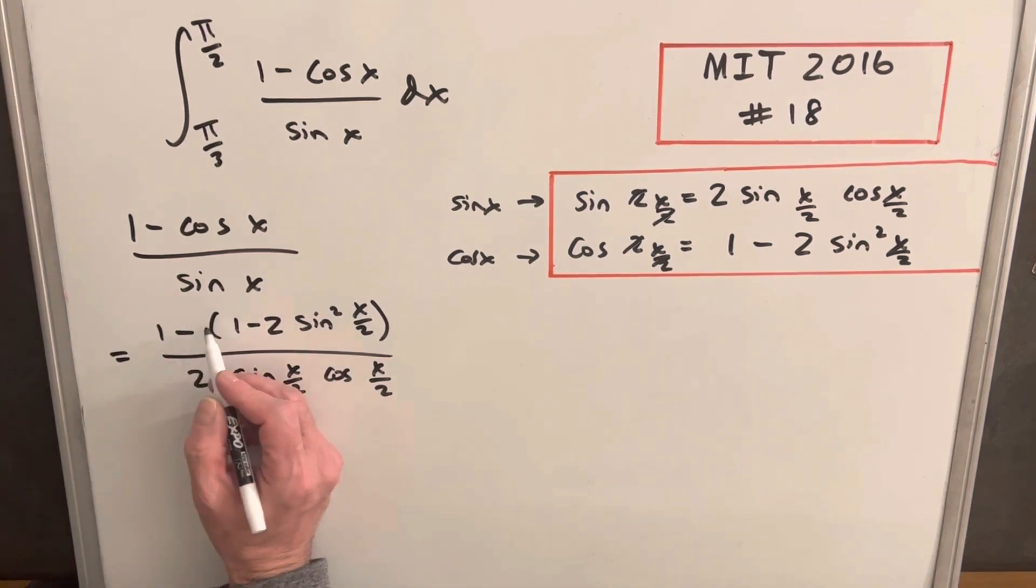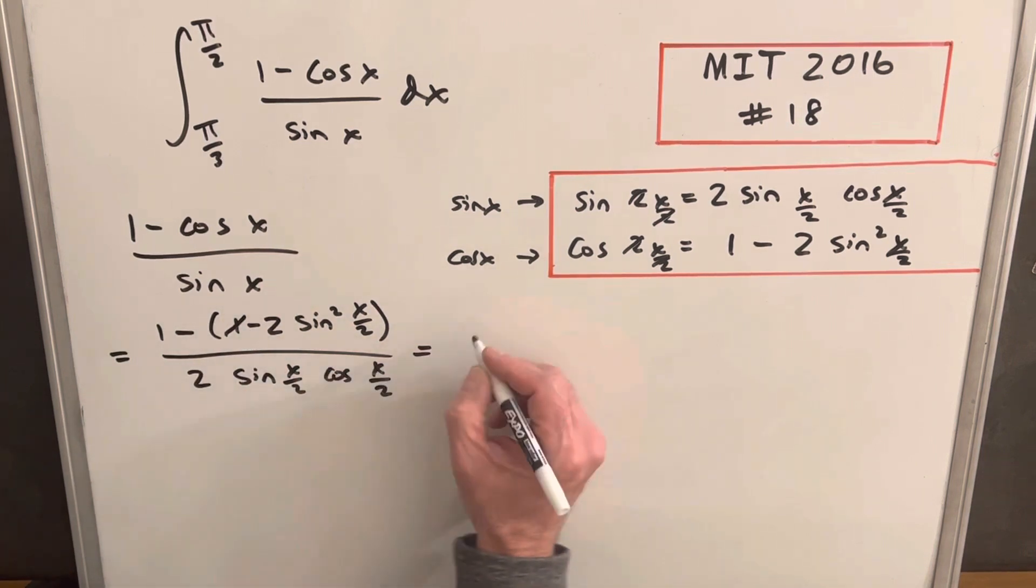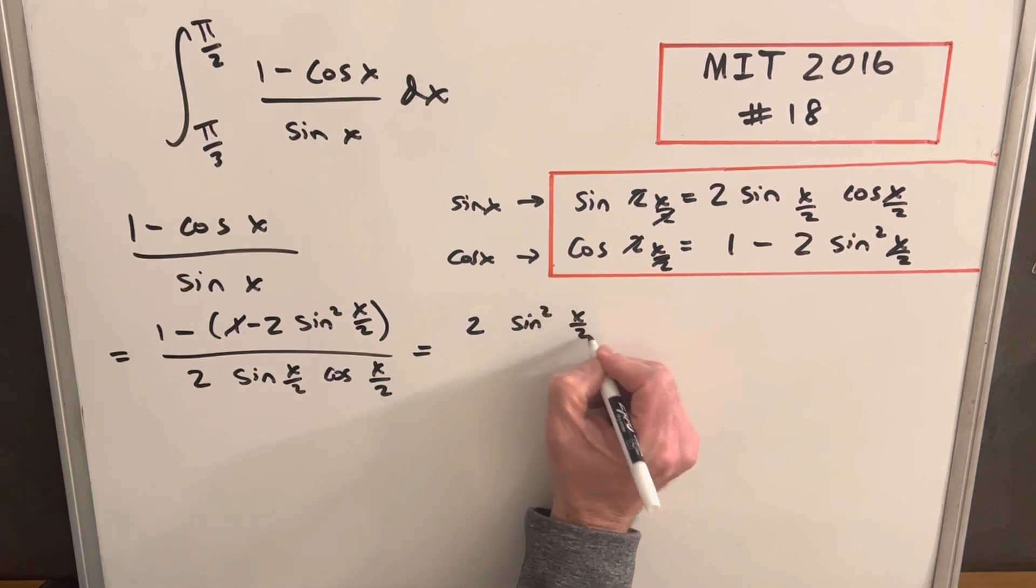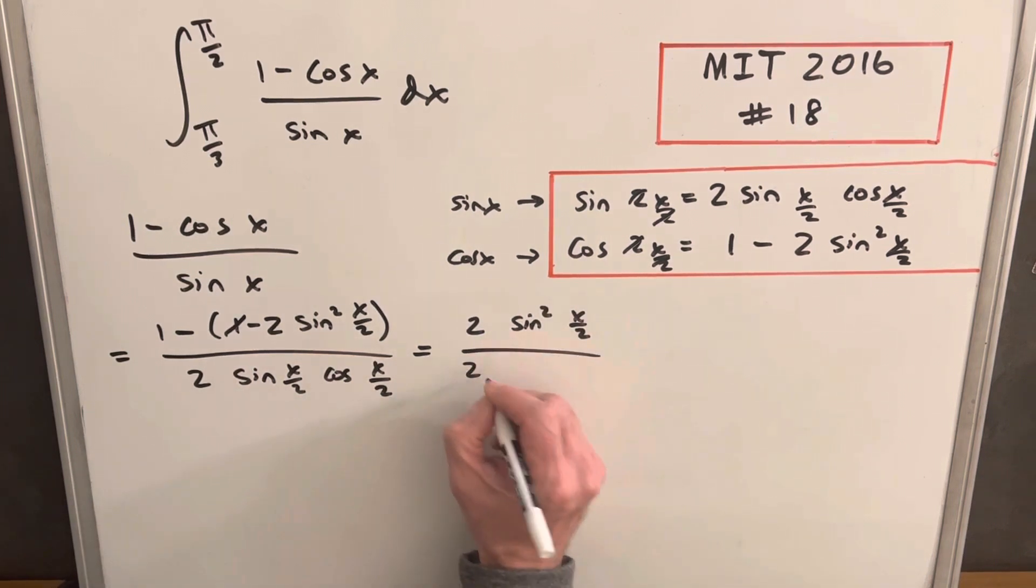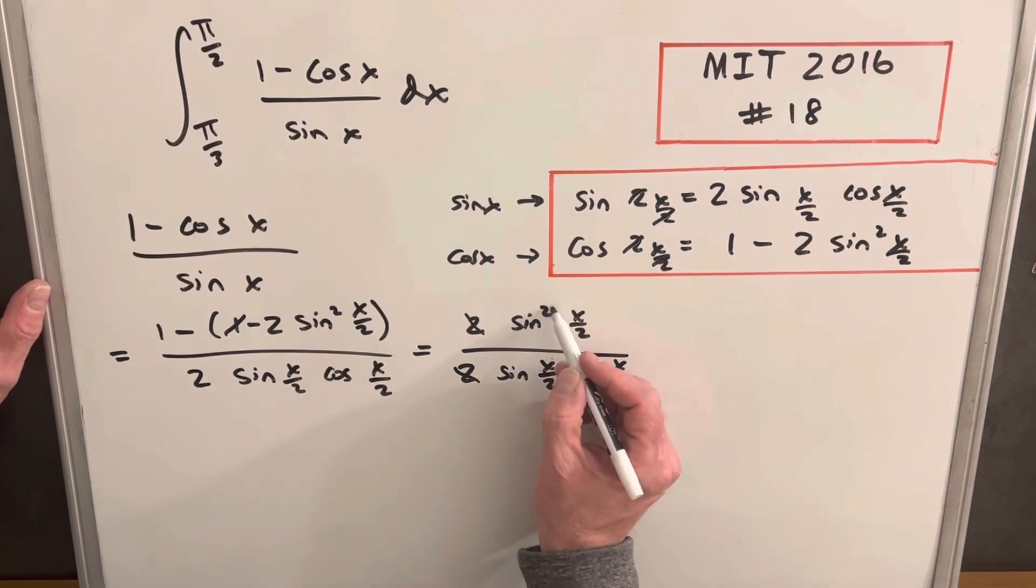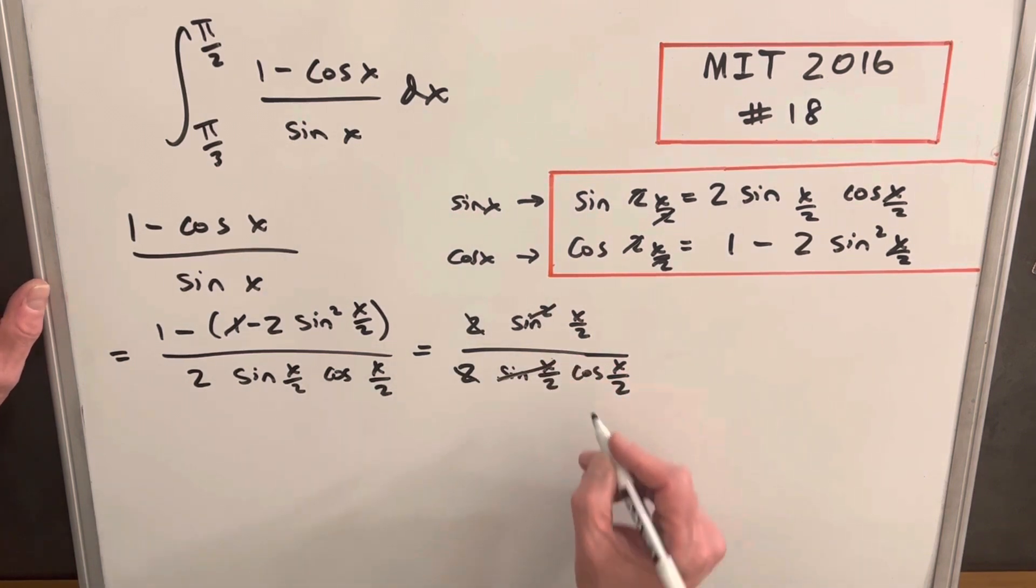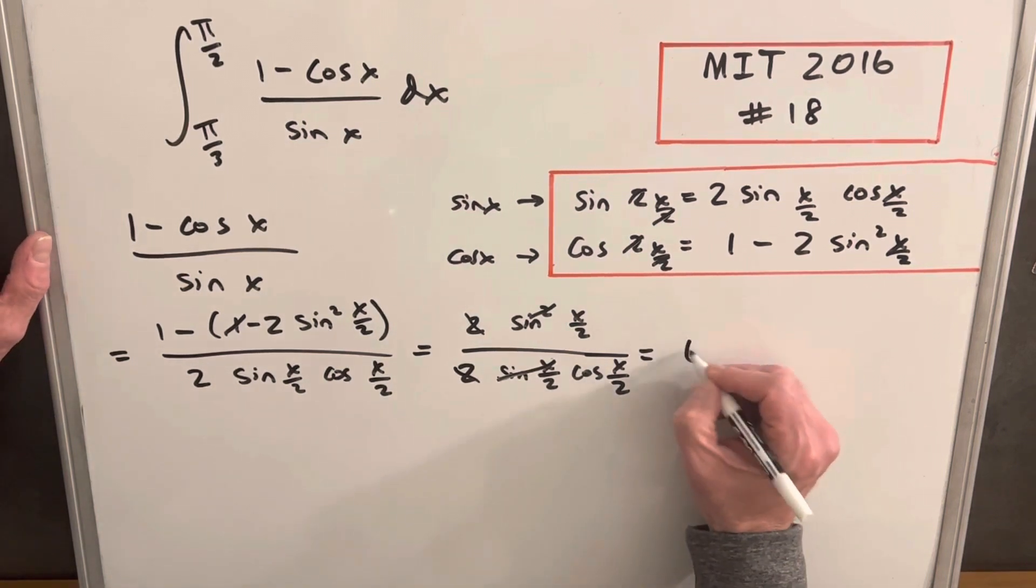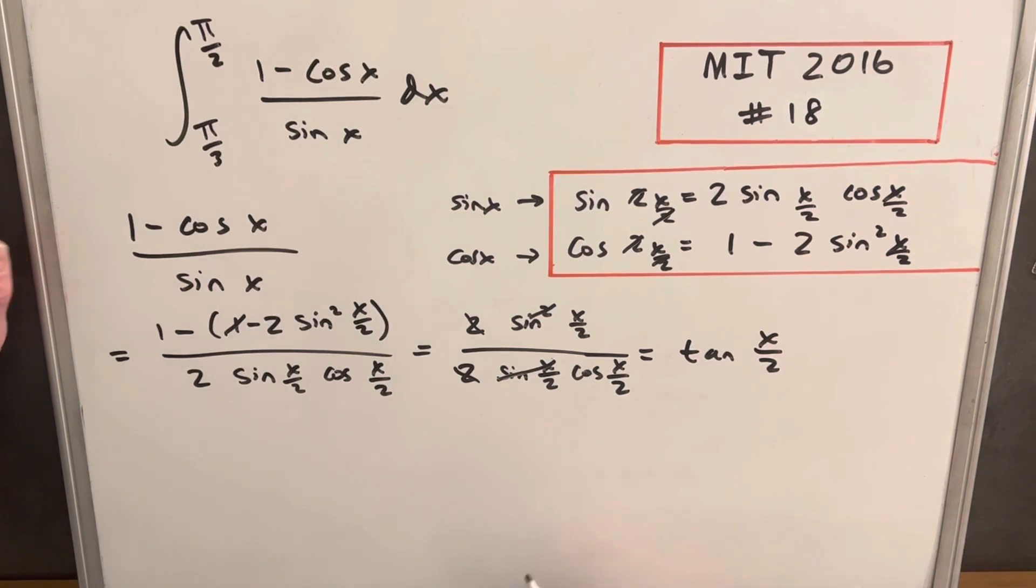Now in here, when we distribute this minus sign, 1 and a 1, that's just going to be 0. We'll distribute in this minus sign on the sine, and we'll have 2 sine squared x over 2. We'll just copy this down. Next, I can cancel my 2s. I can cancel sine and 1 sine, and we're left with sine x over 2 over cosine x over 2, but that's just the same thing as tan x over 2.